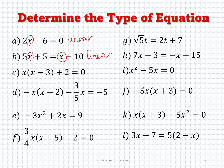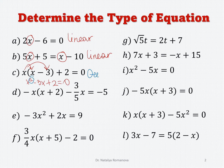Next example: we have x times (x minus 3) plus 2. If you use the distributive property, you get x squared minus 3x plus 2 equals 0. We can see the highest value of the exponent equals 2, so it is a quadratic equation.